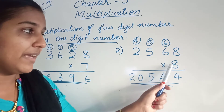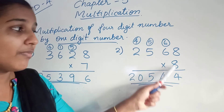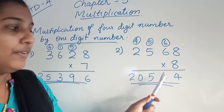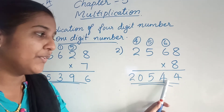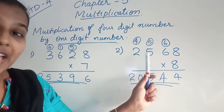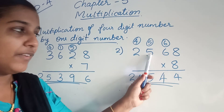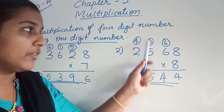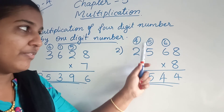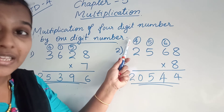Now multiply 8 with 6. That is 8 sixes are 48. 48 plus 6 is 54. From 54, you write 4 here and 5 carry over to the next place. Now multiply 8 with 5. 8 fives are 40. 40 plus 5 is 45. From 45, you write 5 here and 4 carry over to the next place.